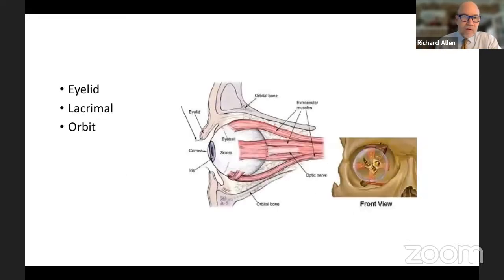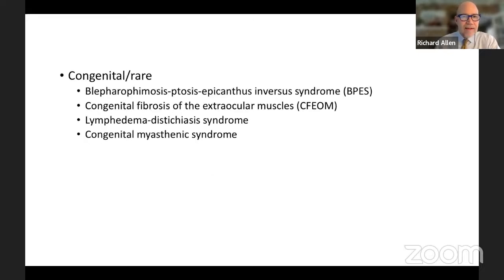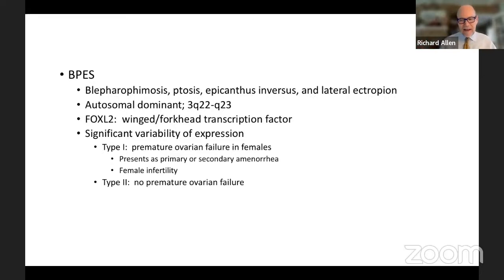When we talk about inherited disorders affecting oculoplastic surgery, we cover eyelid, lacrimal, and orbital disorders. For eyelid conditions, I classify them as congenital rare, non-congenital rare, congenital very rare, and non-congenital very rare. The four most common congenital rare eyelid conditions I encounter are BPES, congenital fibrosis of the extraocular muscles, lymphedema distichiasis syndrome, and congenital myasthenic syndrome.